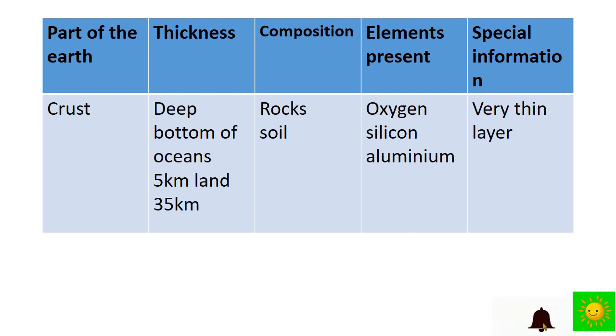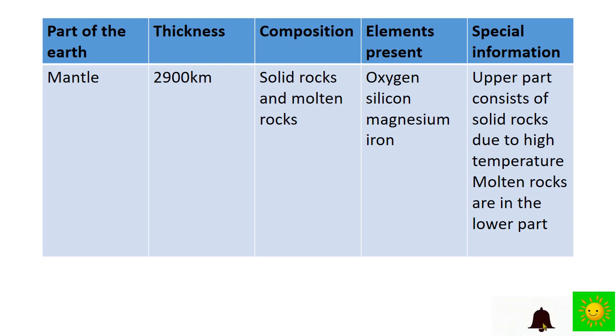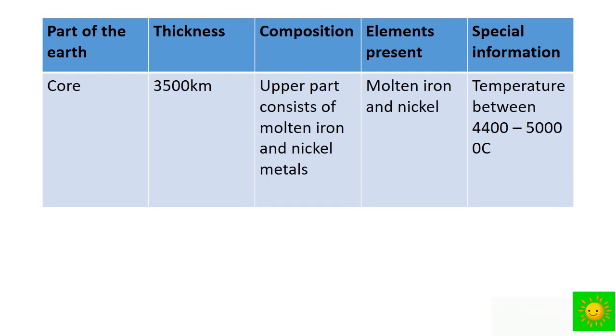Let's see a simple description of layers of the earth. I have given you a table with parts of the earth, their thickness, composition, and elements. First is crust: 5 kilometers under ocean, 35 kilometers on land, made of rocks and soil with oxygen, silicon, and aluminum. Next is mantle: 2,900 kilometers, solid and molten rocks with oxygen, silicon, and magnesium. Then core: 3,500 kilometers, molten iron and nickel, with temperatures between 4,400 to 5,000 degrees Celsius.